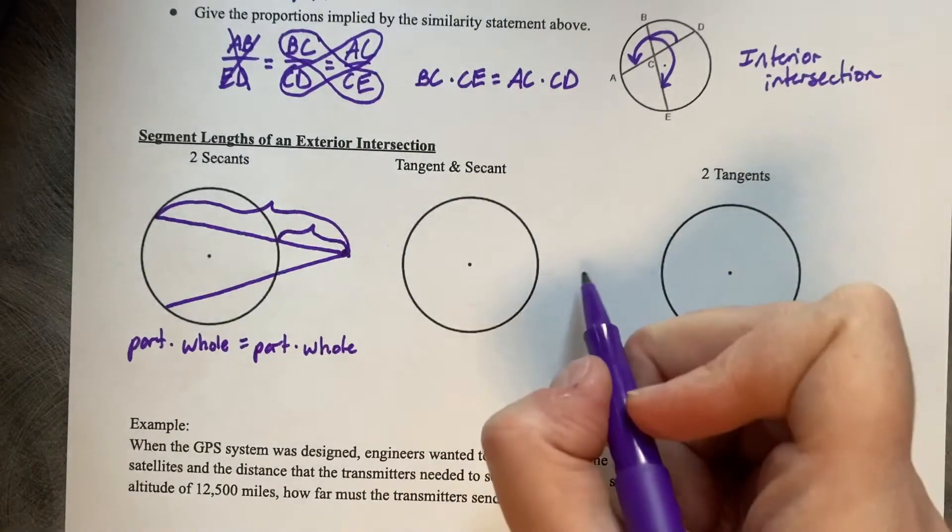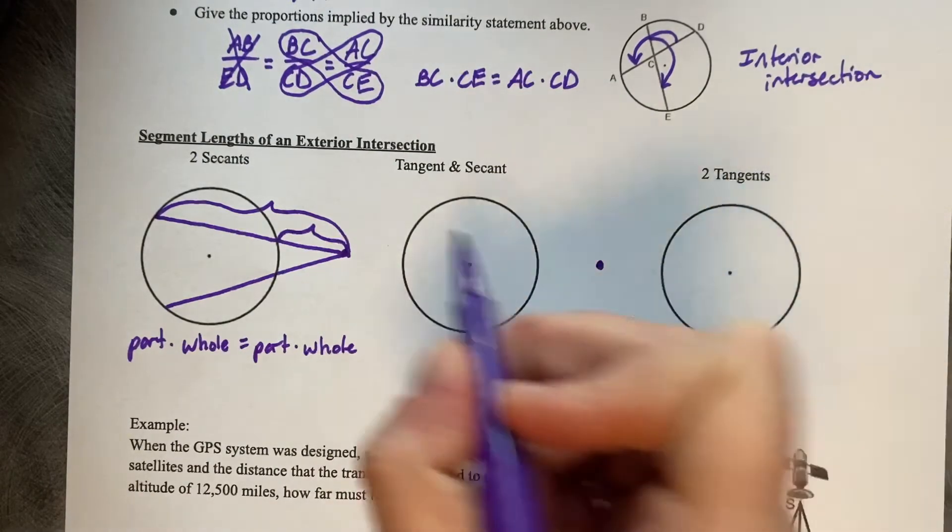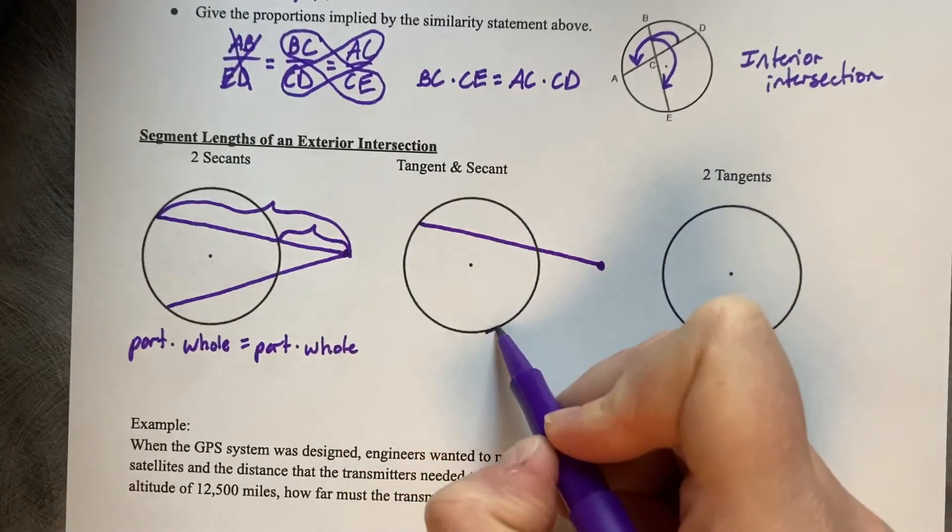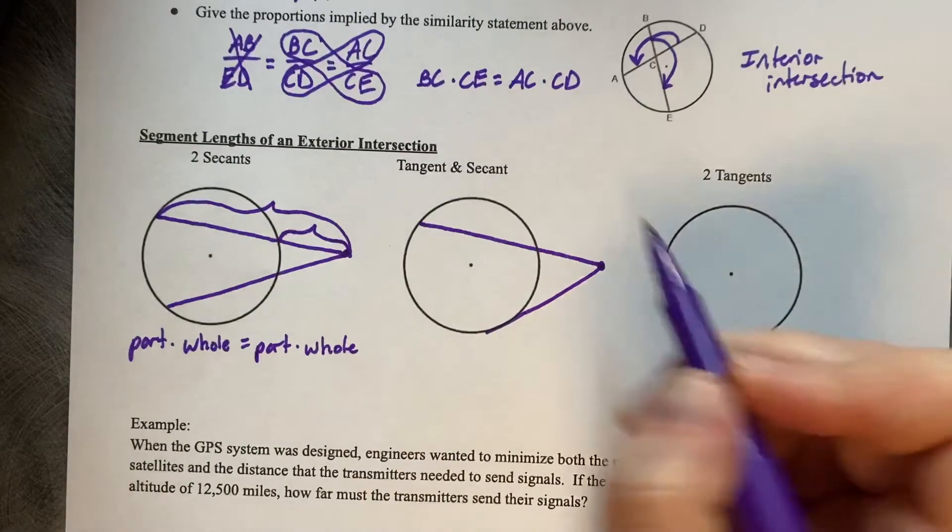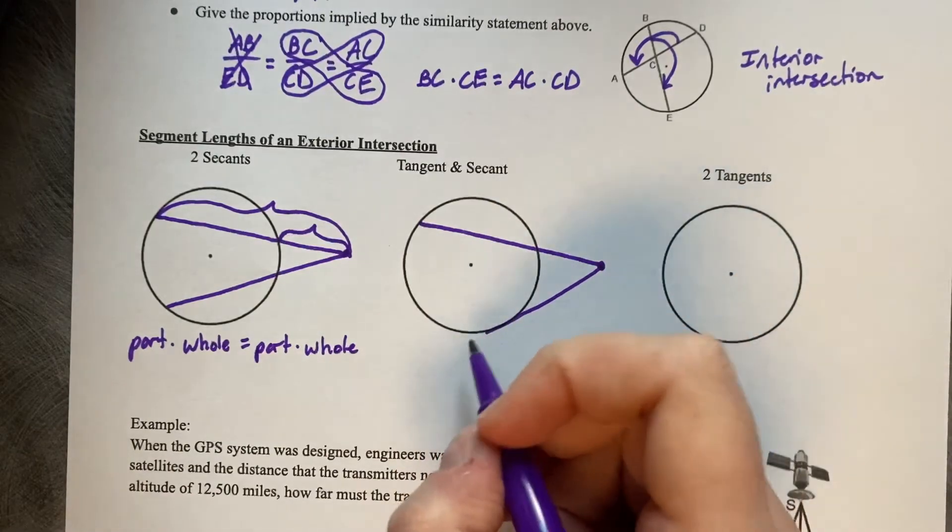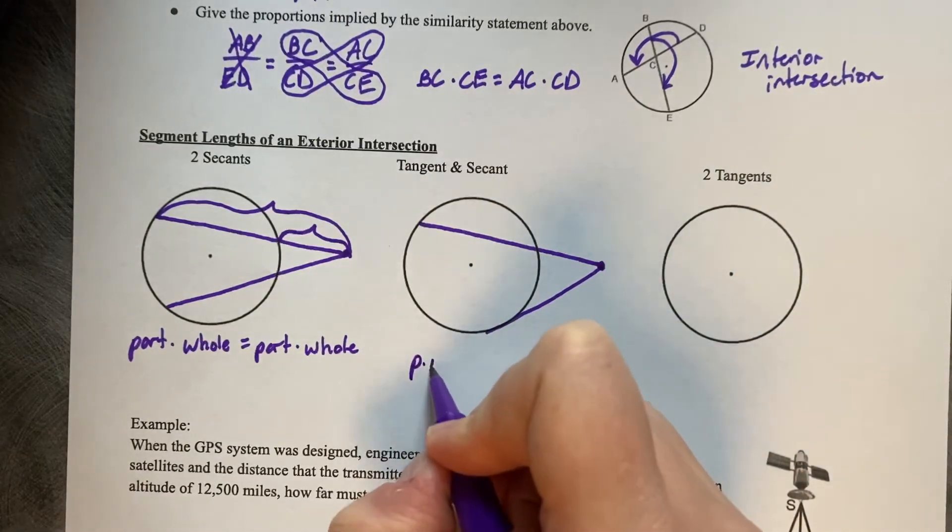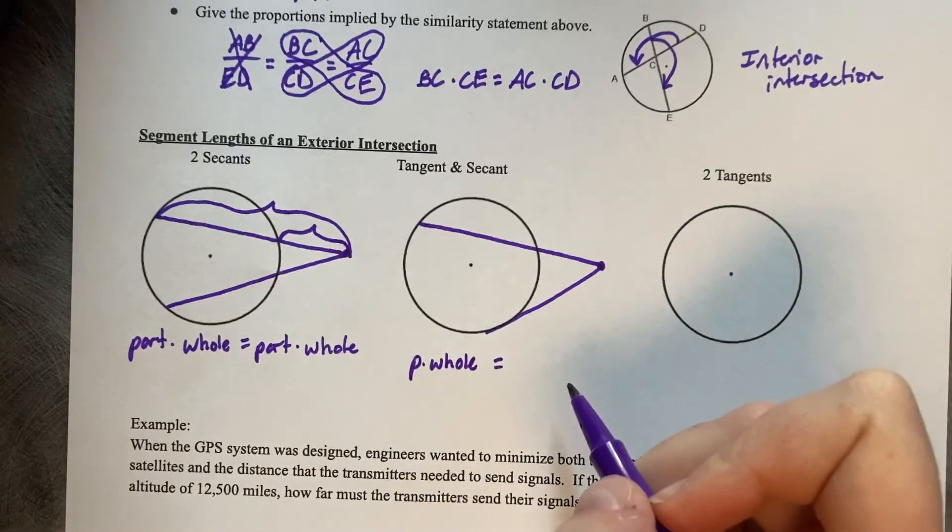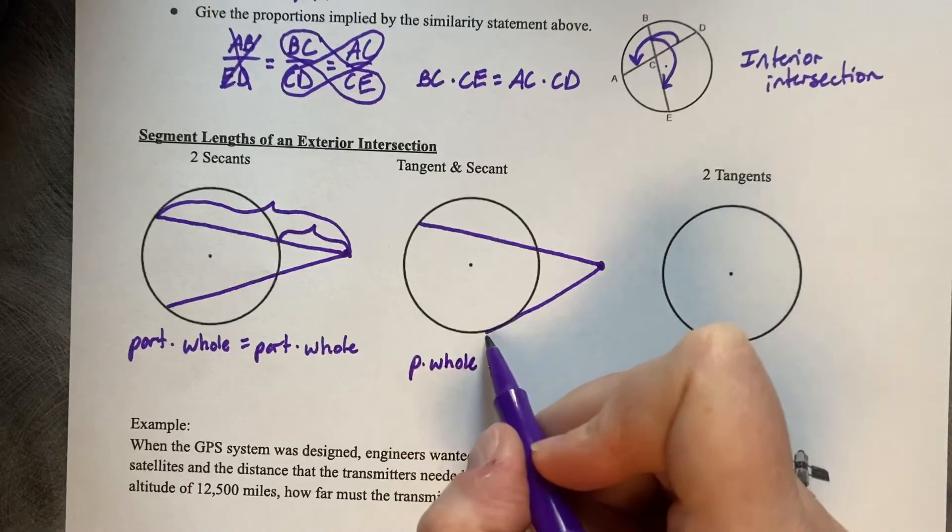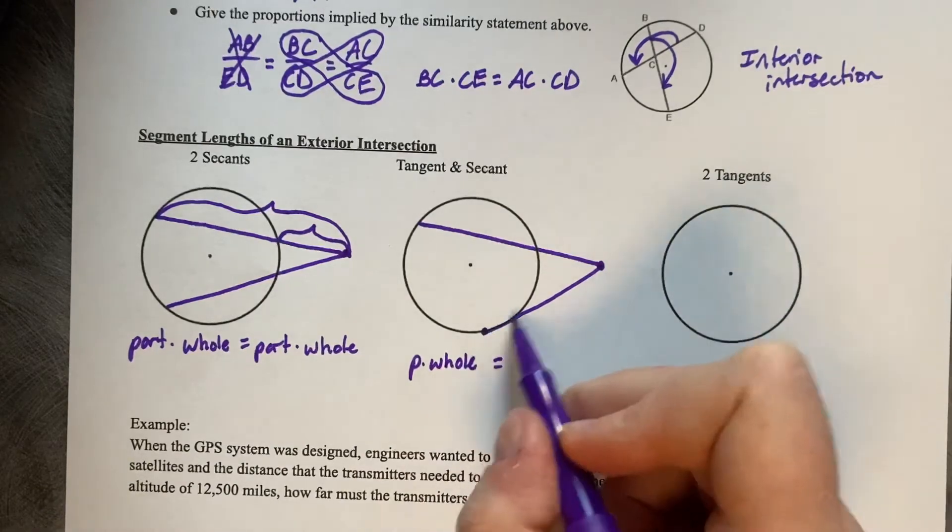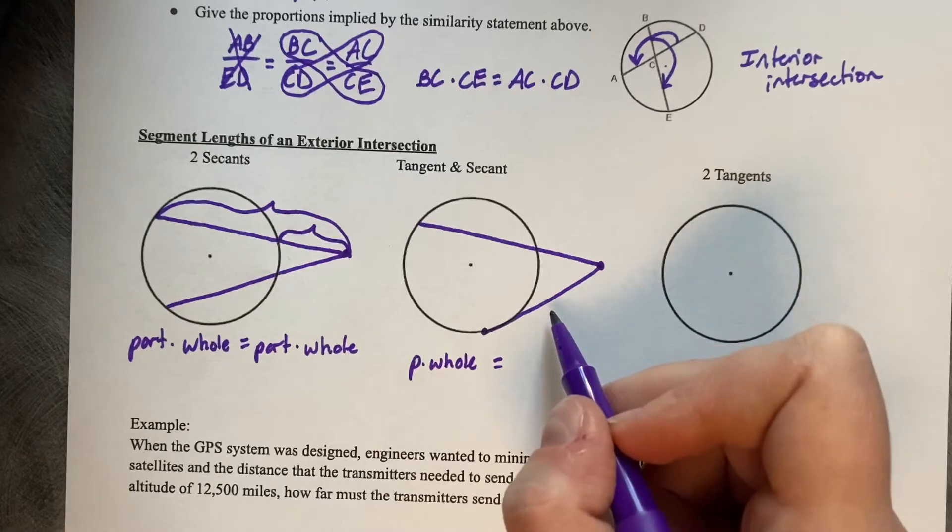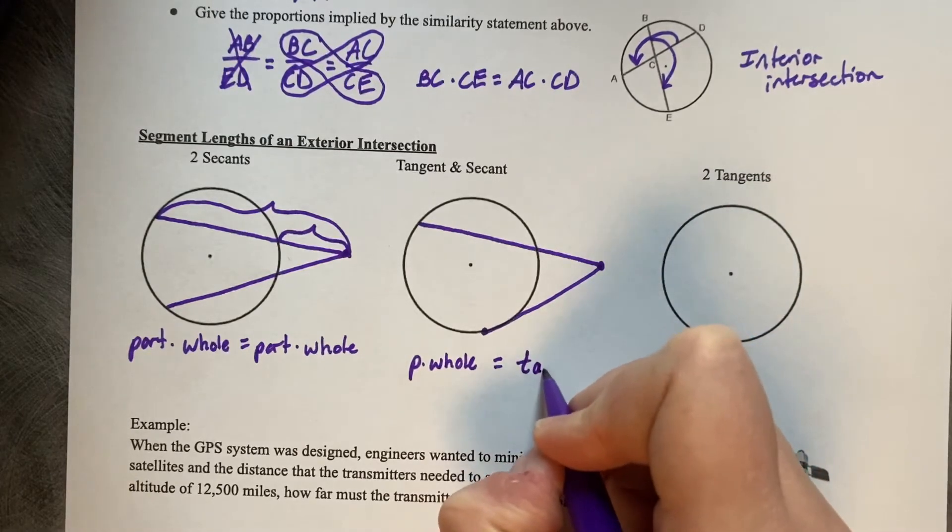How about a tangent and a secant? So let's do a similar exterior point. So here's my secant and here's a tangent. So then you would do the part times the whole of your secant, P standing for part. And then the tangent, there's no part and whole to it. It's just one segment. So you're multiplying it by itself. So it's a tangent times a tangent, or in other words, the tangent squared.